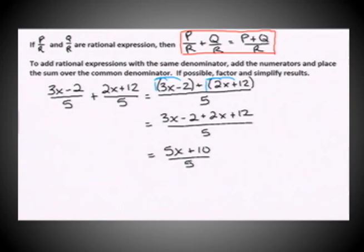Now that we've gotten our numerators combined over our common denominator, the last thing we have to do is factor and simplify if possible. And in this case, we can. Our numerator has a common factor of 5, and when you divide that out, you're left with x plus 2, and then we just have a 5 in the denominator.